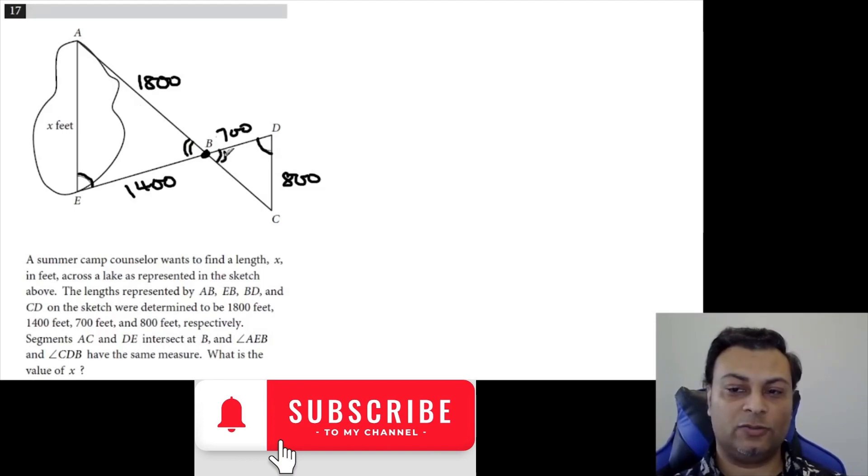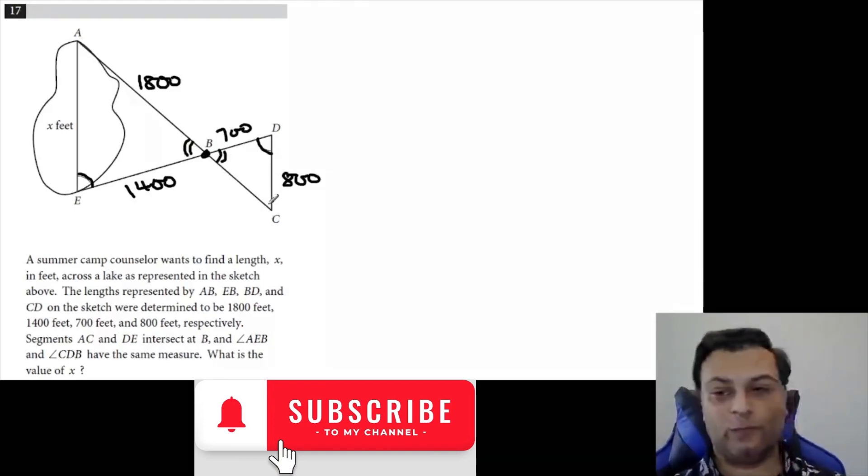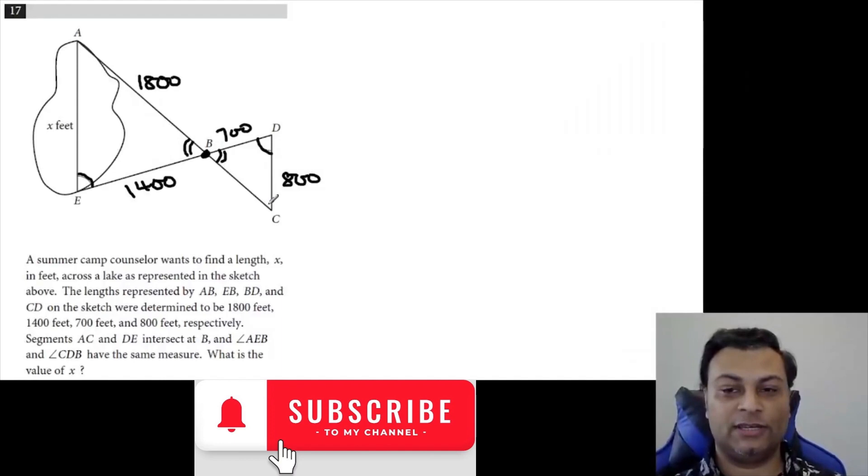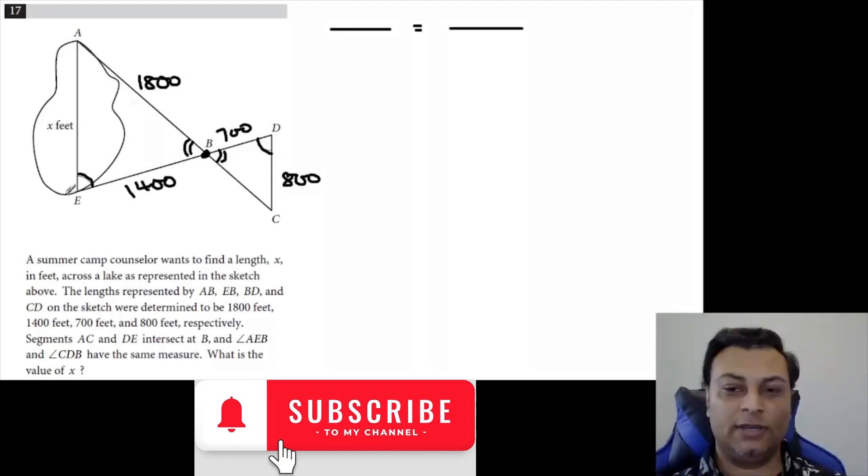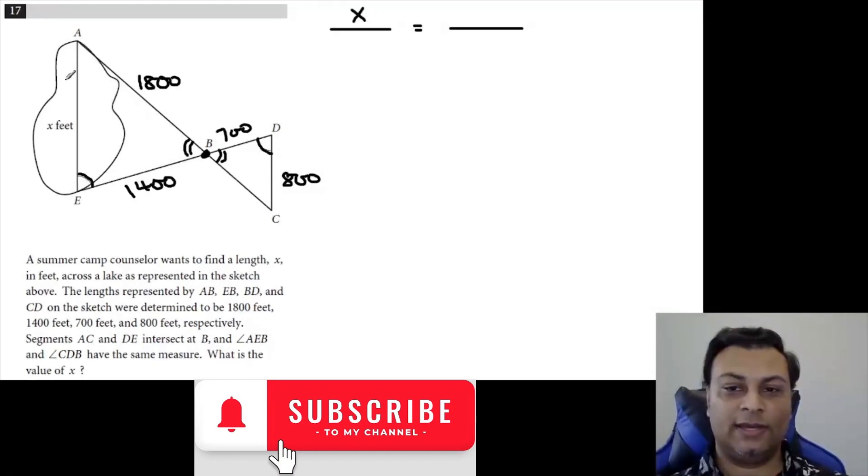What we have is similar triangles. Okay, what's the value of X? So we can use a proportion. X is over here and it's similar to this CD portion. Let me just put this as a triple stripes. Okay, so we have the angle.